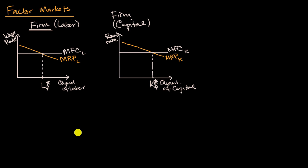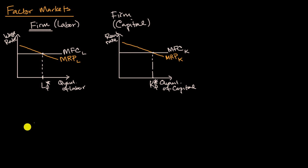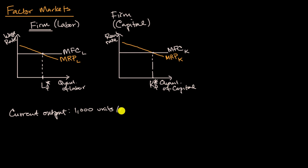An interesting question is that firms have a certain amount of resources and they have to think about how much to put into labor versus how much to put into capital. So they don't just think about these dimensions independently — they have to think about them relative to each other. To help us think through this, let's say we are at a certain level of output — our current output is 1,000 units per day. At our current output, we know what the marginal product of labor and the marginal product of capital are.